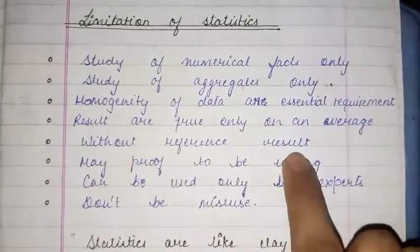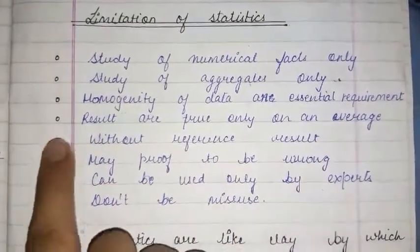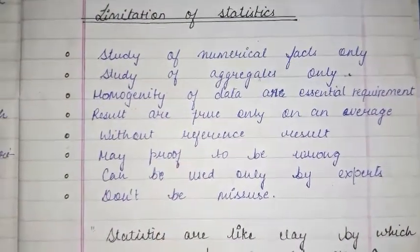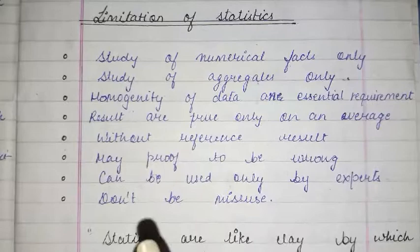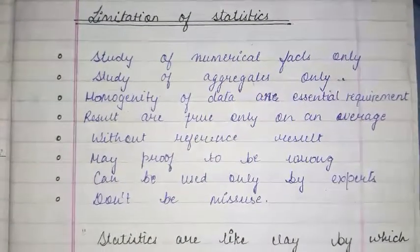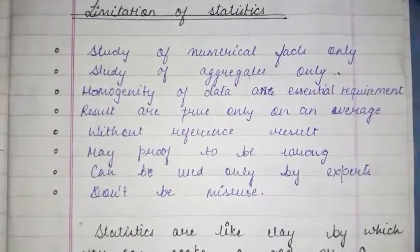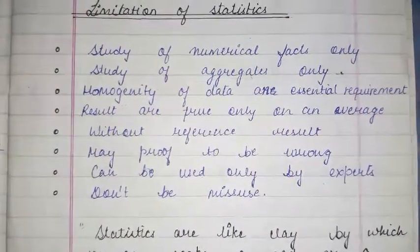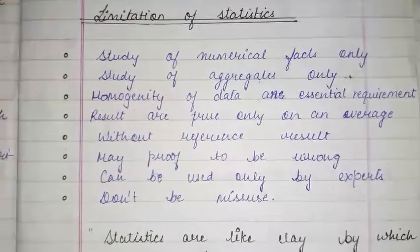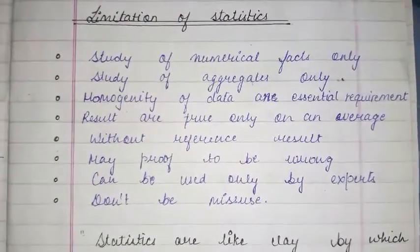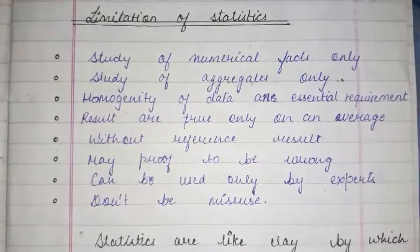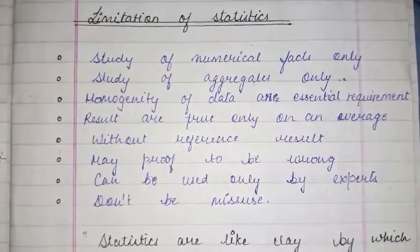The fifth limitation is that without a reference, results may prove to be wrong. For example, if we talk about this year's population without comparing it to last year's population, or without showing results relative to a previous year's figures, then our results can be misleading or wrong.